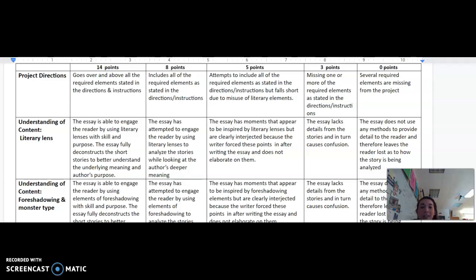8 points is the next step down, that the essay attempts to engage through literary lens analysis while looking at the author's deeper meaning, but doesn't quite make the 14 point category. 5 points, the essay has moments that appear to be inspired by literary lenses, but are clearly interjected because the writer forced these points in after writing the essay and does not elaborate on them.